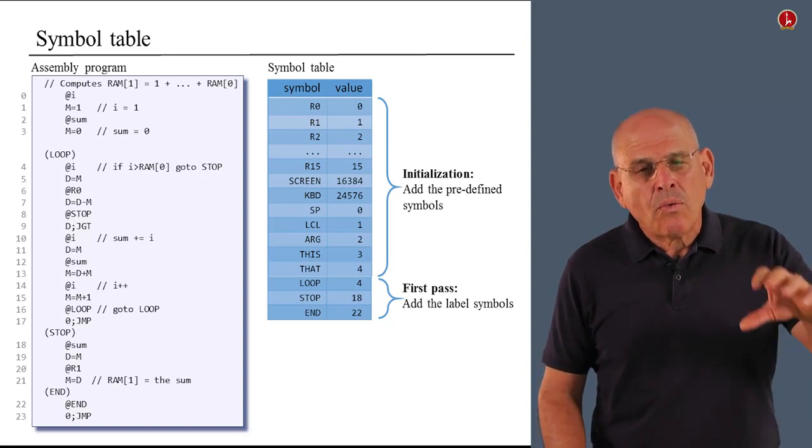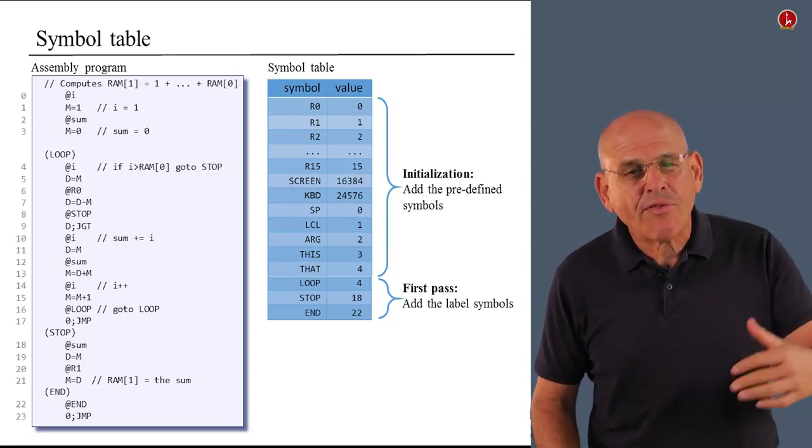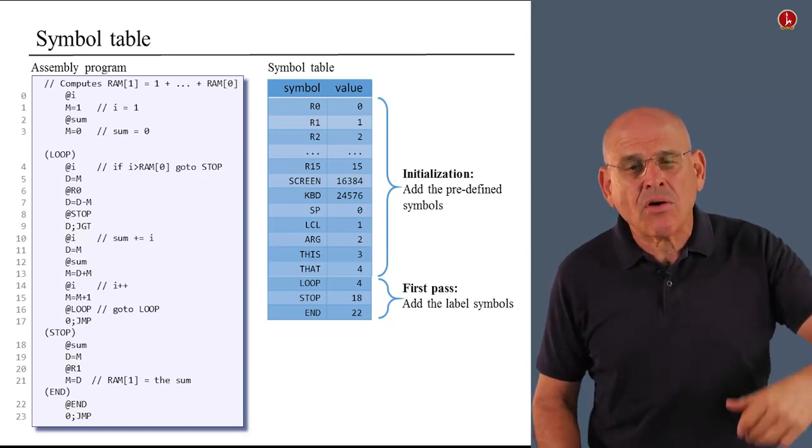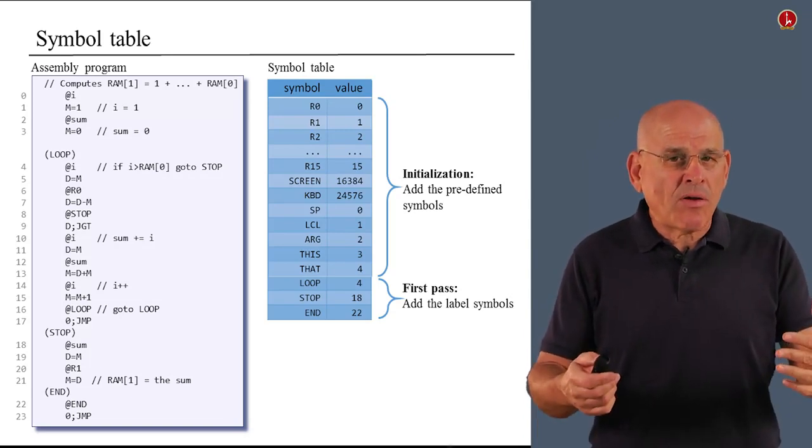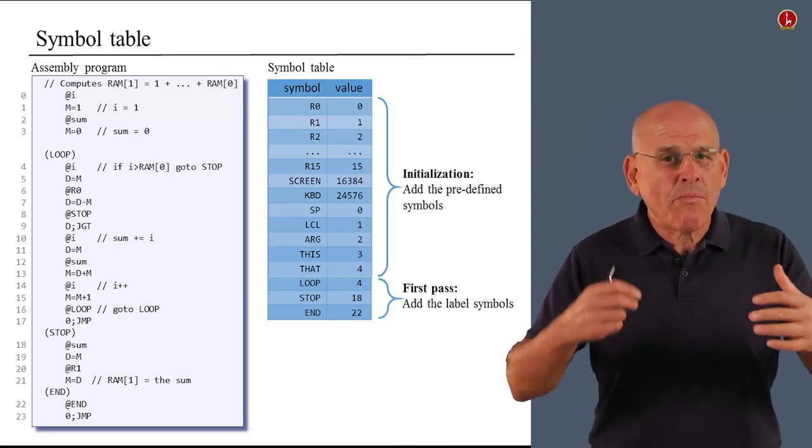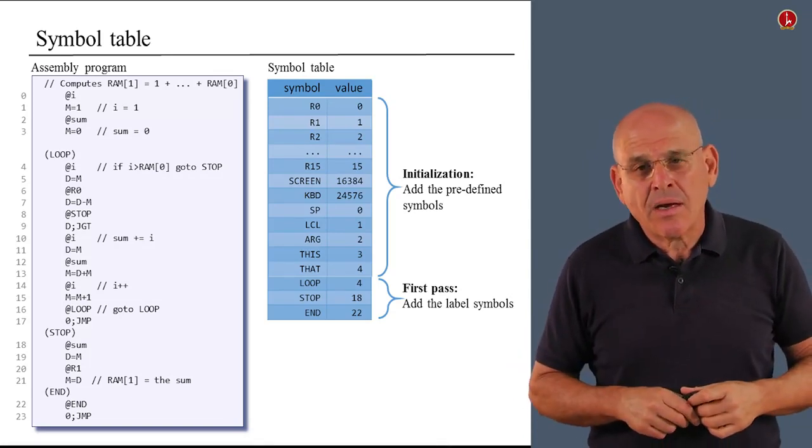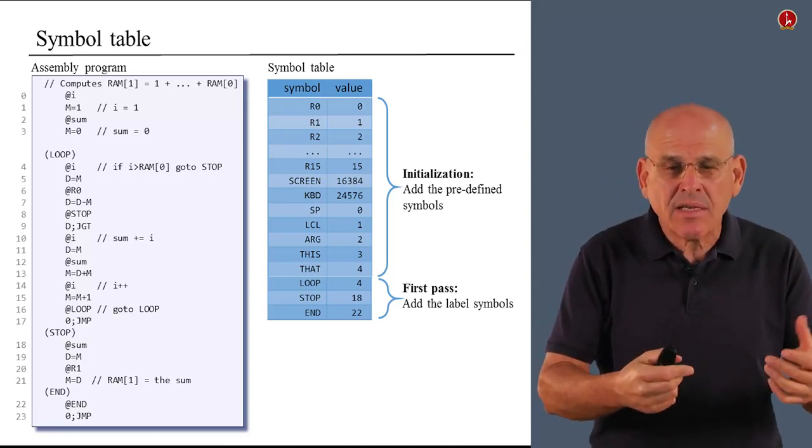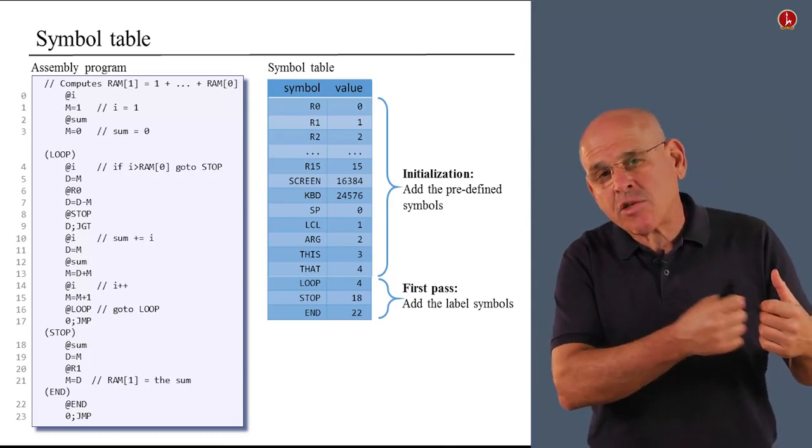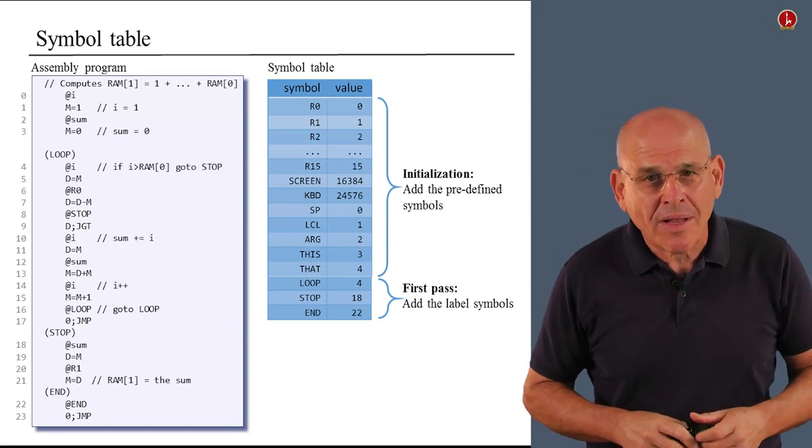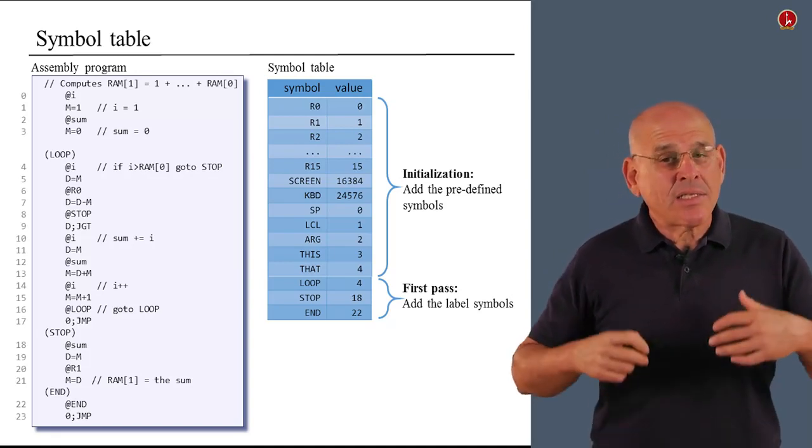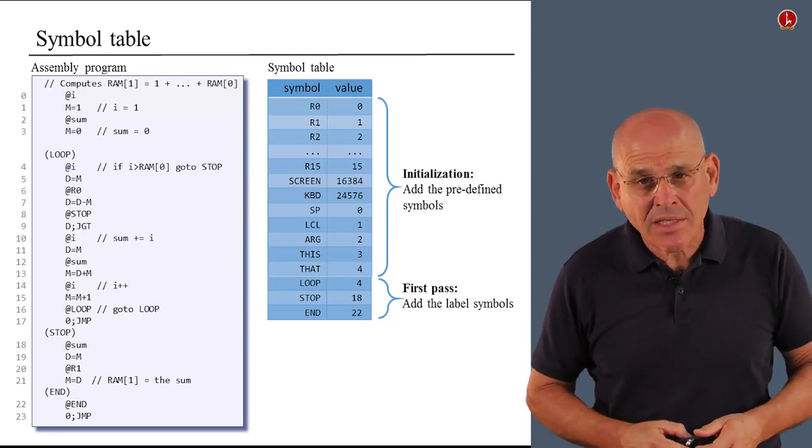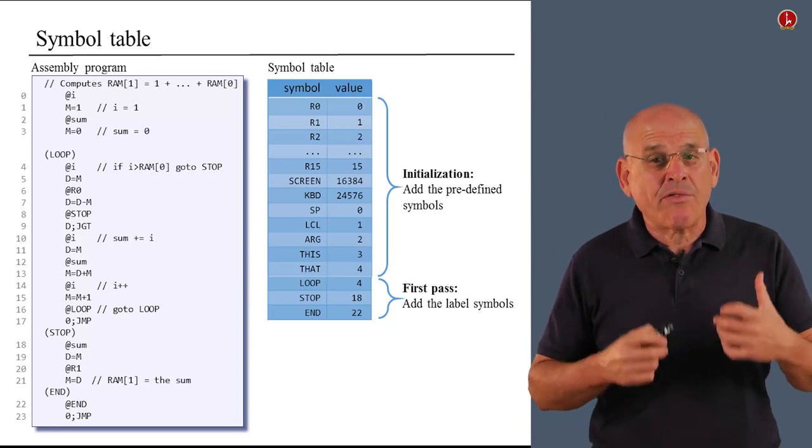Now, we call this process first pass. So the assembler that we are going to develop is going to be a two pass assembly process. In the first pass, we extract from the program all the label symbols. And in the second pass, which I'm going to discuss next, we're going to extract all the variable symbols.